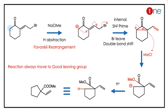The anion has to be quenched — how? By an internal SN2' reaction. The SN2' reaction is similar to SN2, but the attack is from the alpha carbon. So the anion attacks the double bond, the double bond switches, and you have bromine elimination. The leaving group always departs.